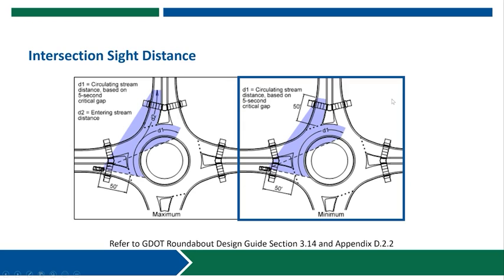So this would be your minimum sight distance criteria. GDOT's preference is that the actual sight distance falls somewhere between the minimum and the maximum, and so you would need to calculate both cases of sight distance and then also identify what specific sight distance your project site can provide based upon the constraints in the adjacent properties surrounding the intersection.